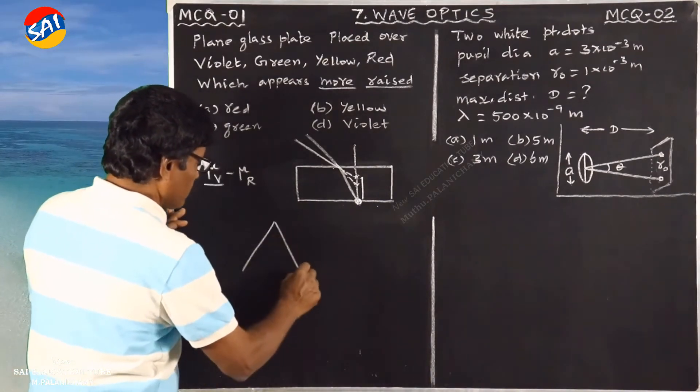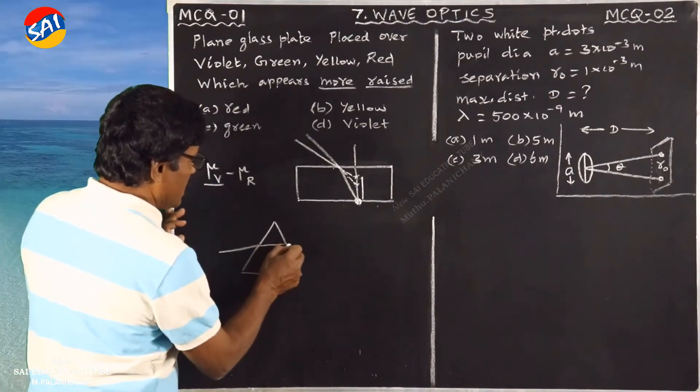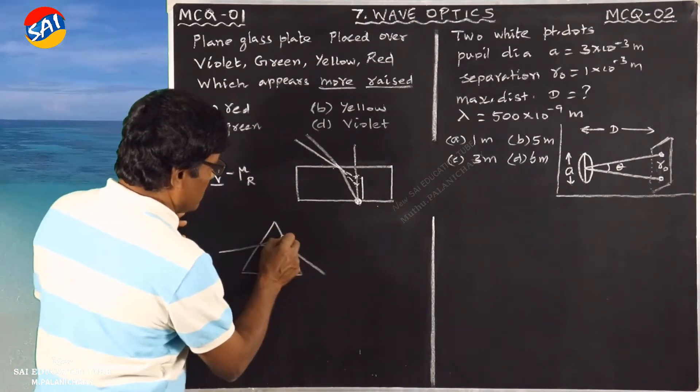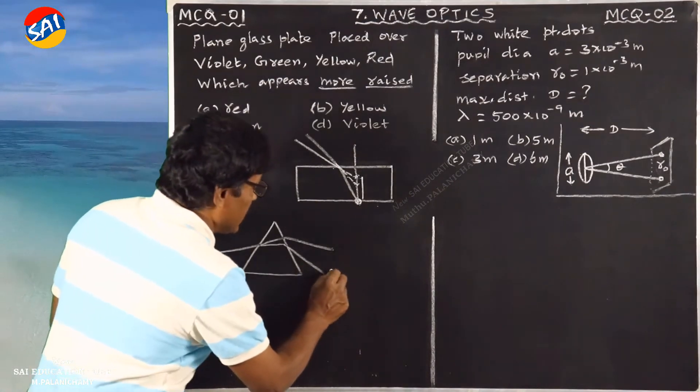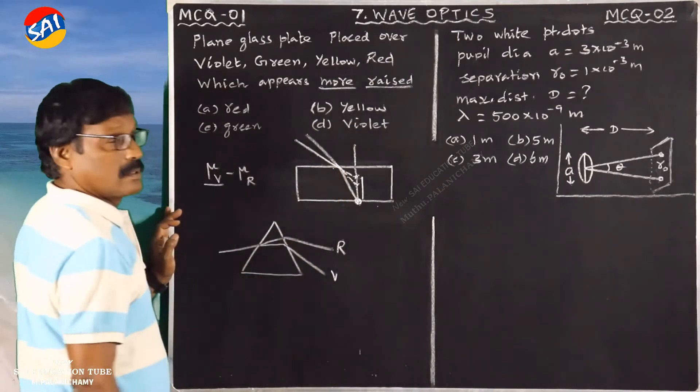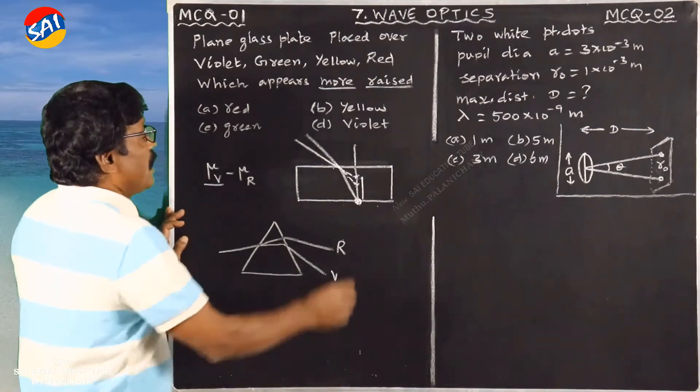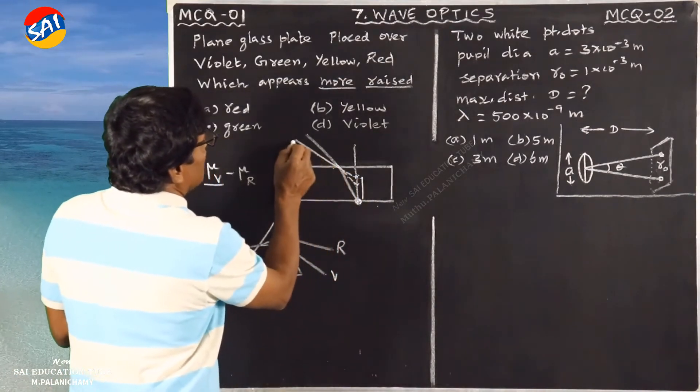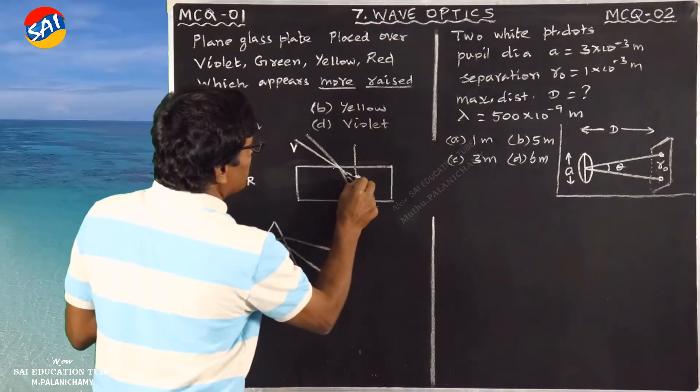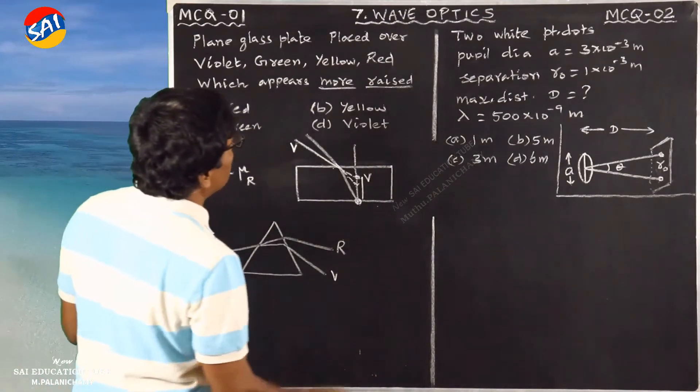Let's take a look. The highest refractive index is for violet. That is why violet appears most raised. So what is the answer?